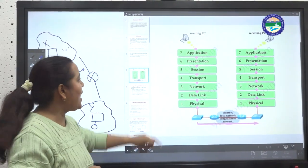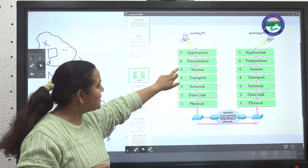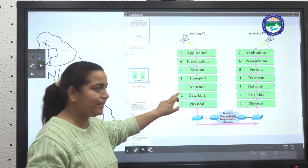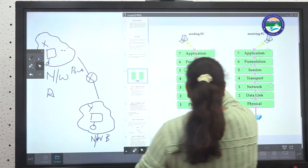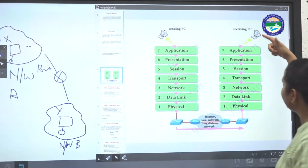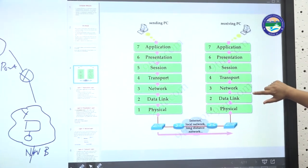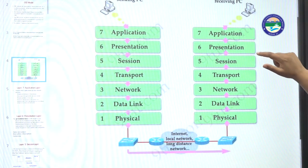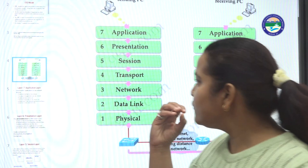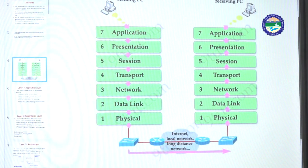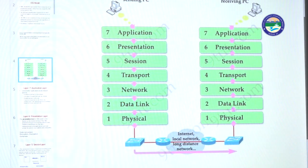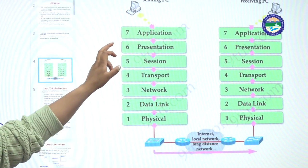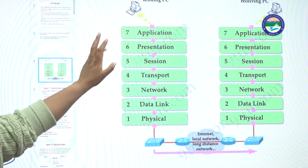The seven layers are application layer, presentation layer, session layer, transport layer, network layer, data link layer, and physical layer. On the sender side, we have these layers from top to bottom. On the receiver end, it's physical layer up to application layer. Each layer has different work. From the sender side, the application layer is the first layer that works.